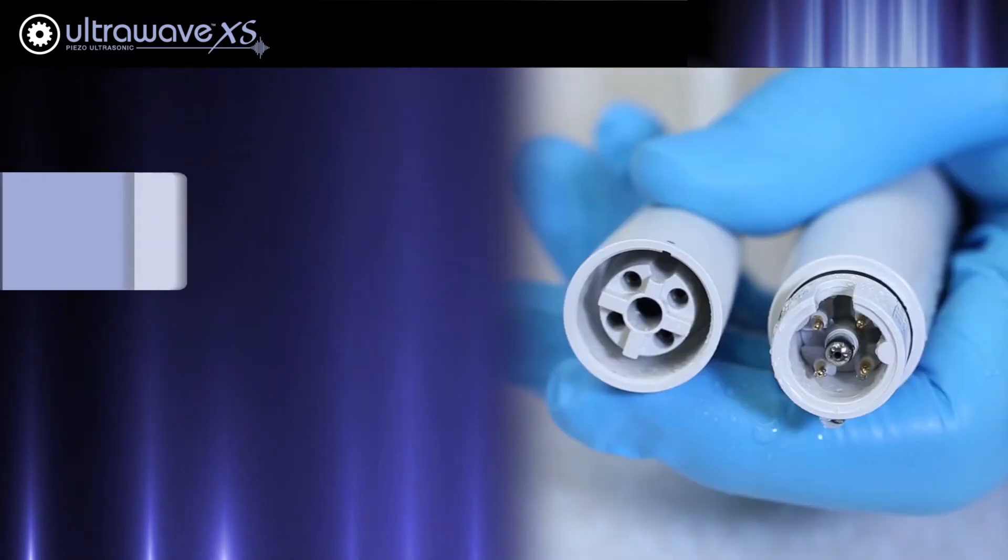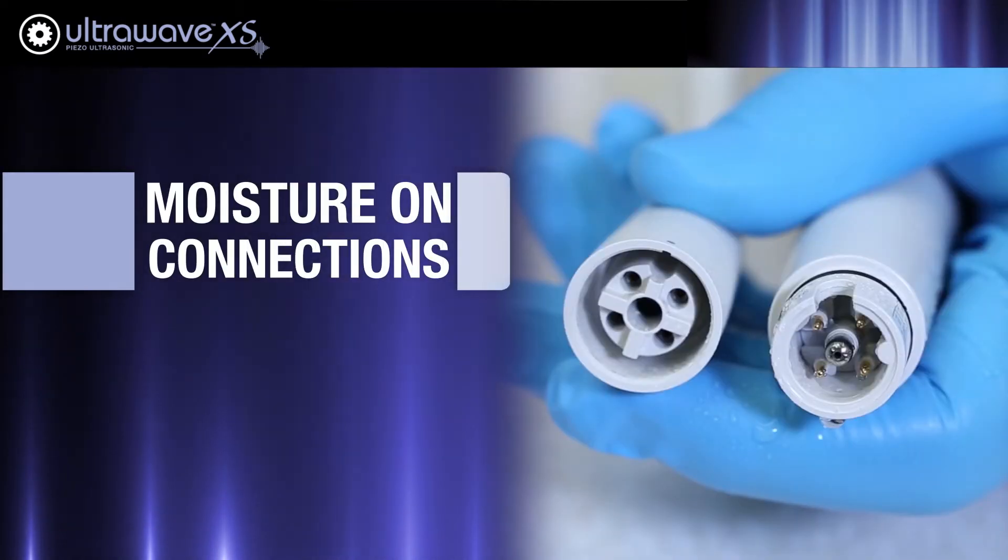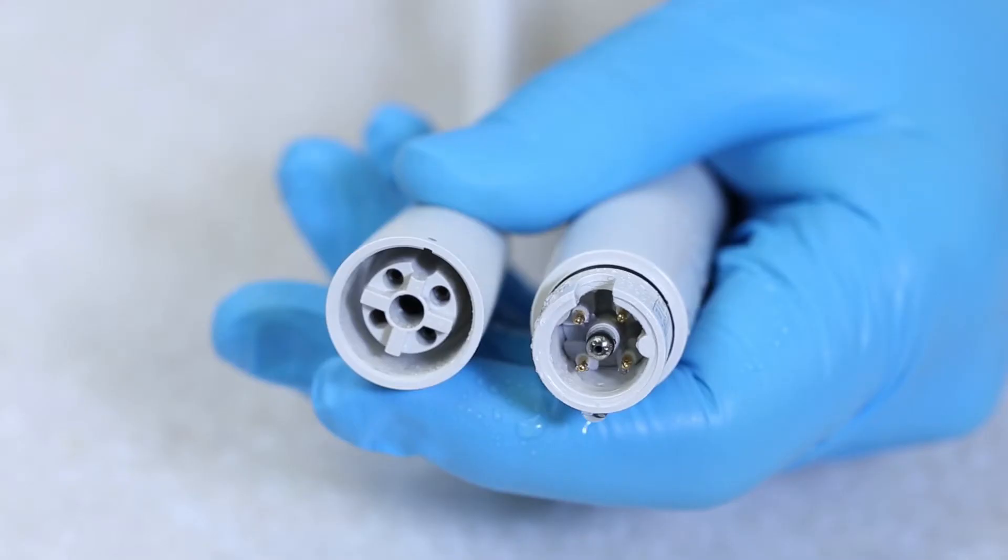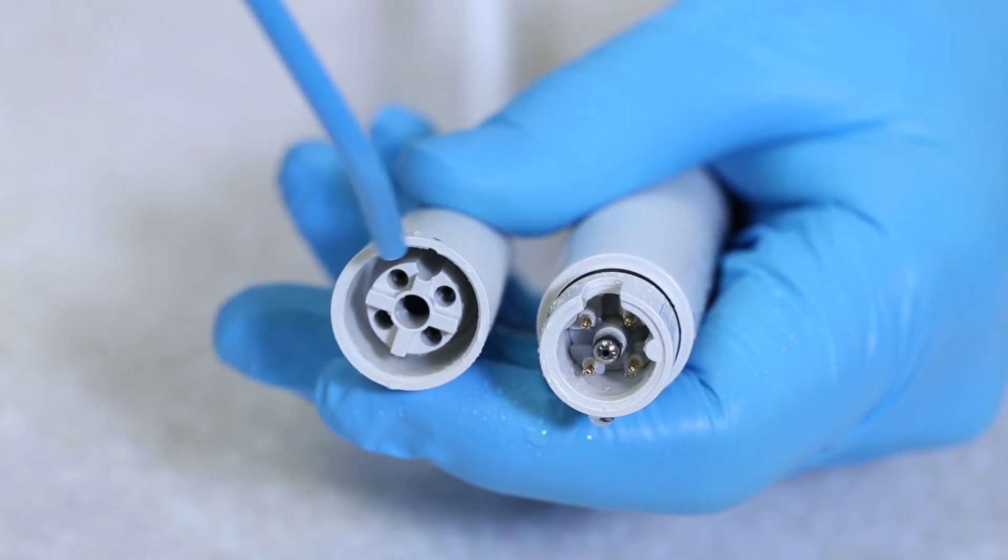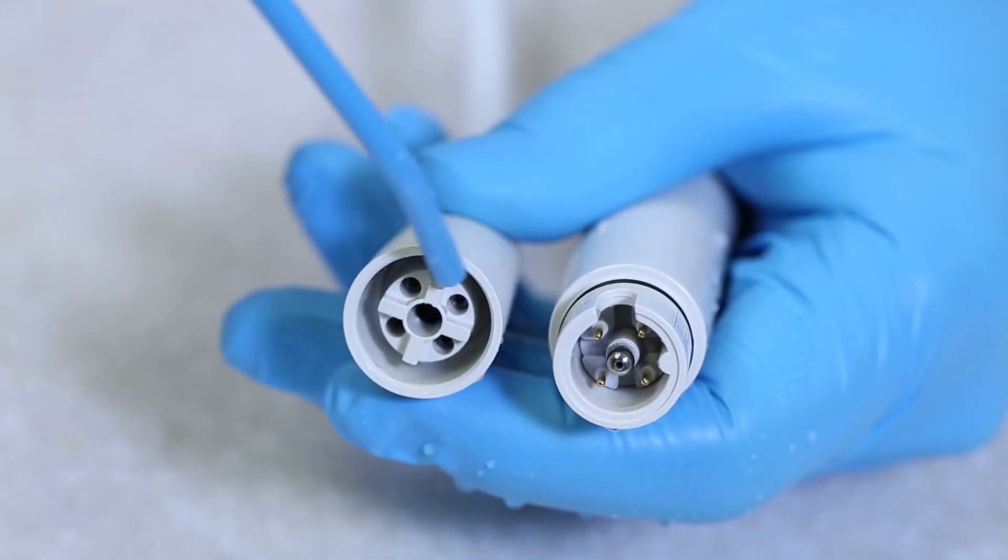If you are using the correct tip and it is not worn down, the problem may be that moisture has gotten on the connections between the handpiece and the cord. If this is the case, thoroughly dry the connections until all moisture is gone.